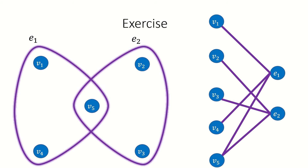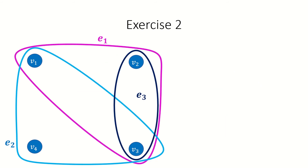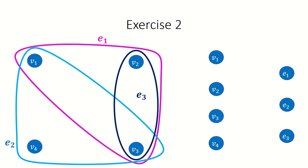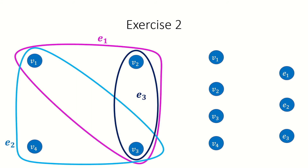As another exercise, what's the incidence graph of this hypergraph? Again, we need to find the vertex set. Next, find all the edges incident to the part that corresponds to edges in the hypergraph. In the hypergraph, edge e sub 1 is incident to vertices v sub 1, v sub 2, and v sub 3. So in the incidence graph, vertex e sub 1 will be adjacent to vertices v sub 1, v sub 2, and v sub 3.